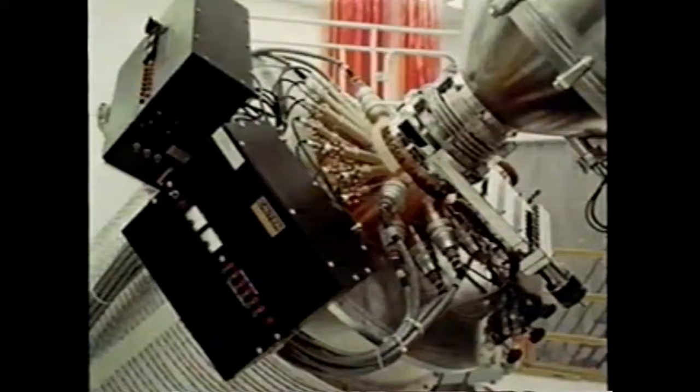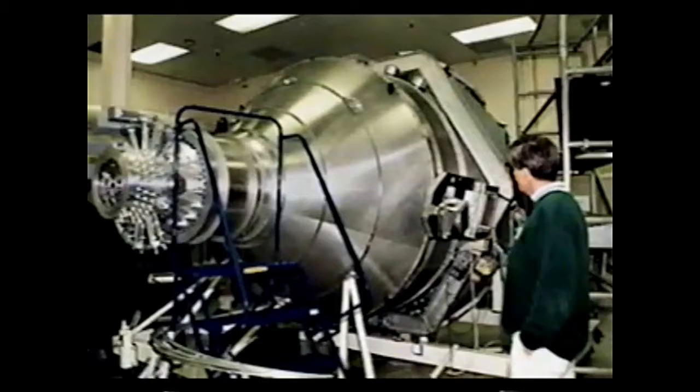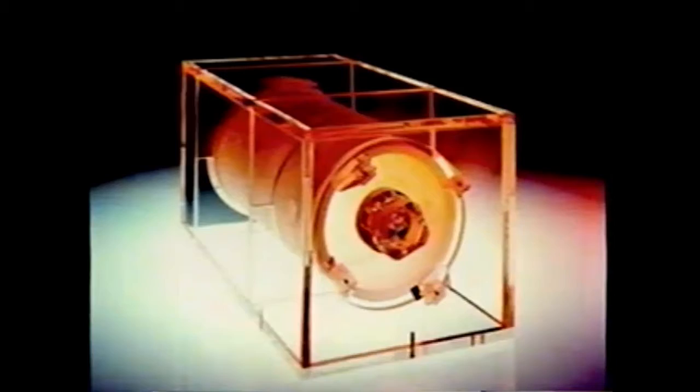What we're doing with Gravity Probe B is seeing how space-time actually warps, by putting this satellite in orbit around Earth, and measuring the actual twisting that the Earth, as a sphere on this gravity surface, effects, and how it pulls space-time around it.